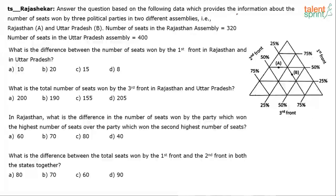Answer the question based on the following data, which provides information about the number of seats won by three political parties in two different assemblies: Rajasthan (A) and Uttar Pradesh (B). The number of seats in Rajasthan assembly is 320 and the number of seats in Uttar Pradesh assembly is 400.